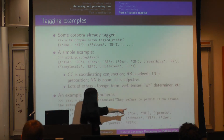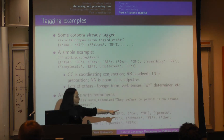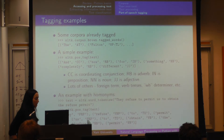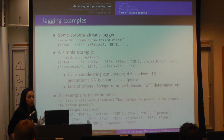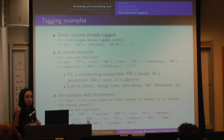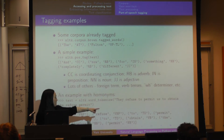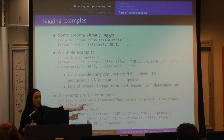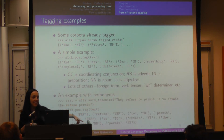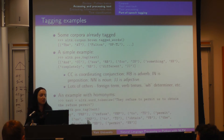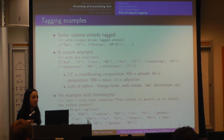Another reason why we want to be able to tag words is, for example, if you want to use a robot that is going to read your text message out loud with voice, then it should be able to distinguish between 'permit' (noun) and 'permit' (verb). By knowing that one of them is a verb and the other one is a noun, it's going to be able to pronounce it correctly, otherwise not.